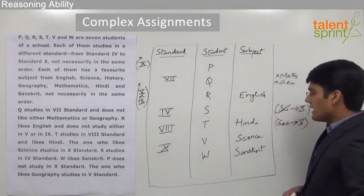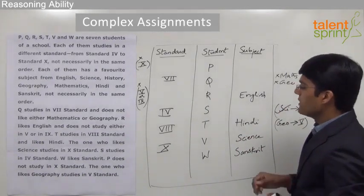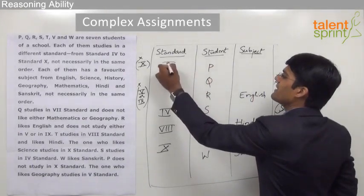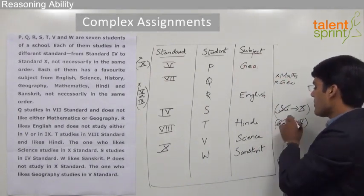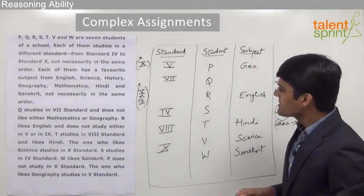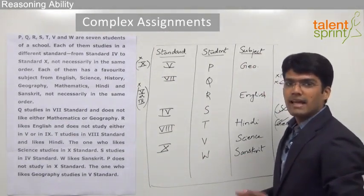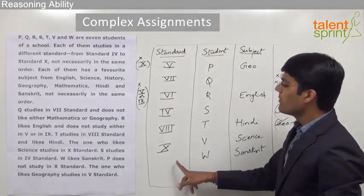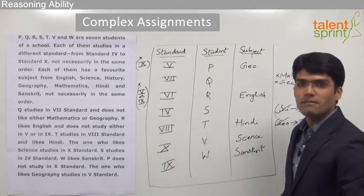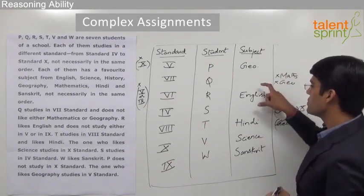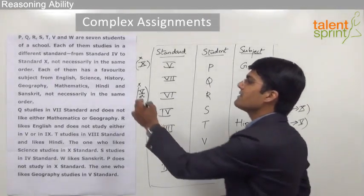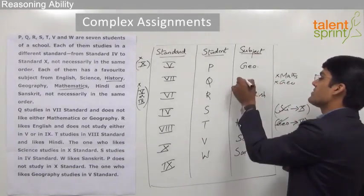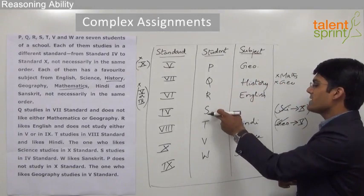Next, geography and 5th standard should go together, and the only person left with both columns vacant is P. So P studies in 5th standard and his favorite subject is geography. Now there are two classes yet to be allotted: class 9 and class 6. We know that student R does not study in class 9, so he has to go to class 6, and the remaining student W should be studying in class 9. Moving on to subjects, the two subjects not yet allotted are history and mathematics. Since Q does not like mathematics, the only option for Q is history, and therefore S takes mathematics.